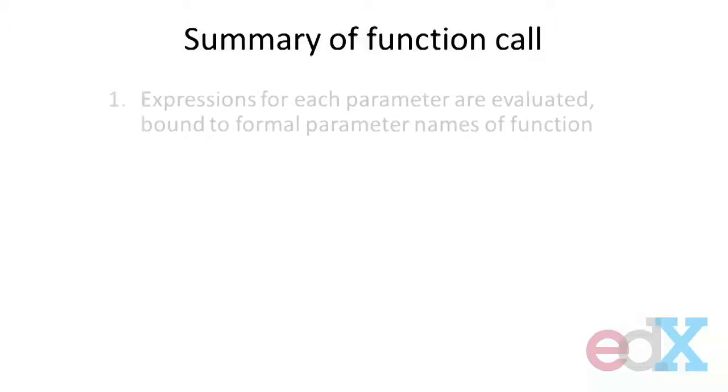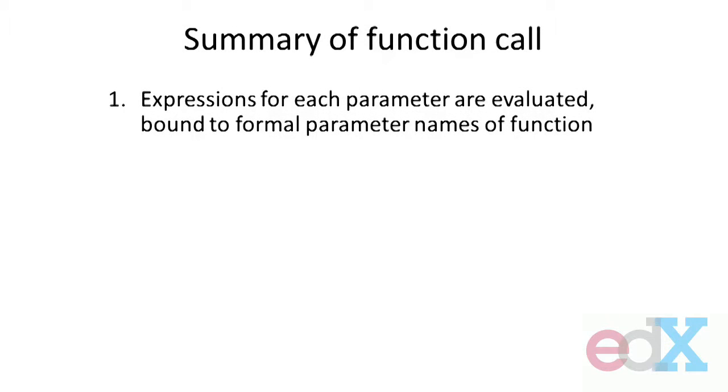So, to summarize this then, the sequence of events are, when we call a function, the expressions for each parameter are evaluated, the normal way they would be in Python, and they are bound to the formal parameter names of the function. It should be one expression for each parameter name.